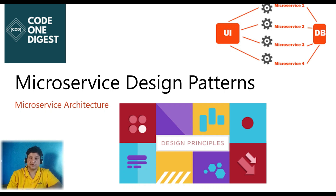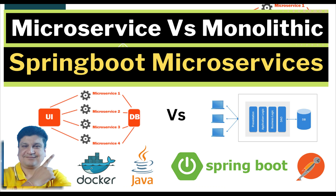Later we will discuss each of these patterns in detail. In the previous video we discussed monolithic and microservice architecture. Can you explain the difference between these architectures? Provide your answer in the comment section of this video. If you have not seen the previous video, please go and watch it — the link is provided on your screen and also in the description section.